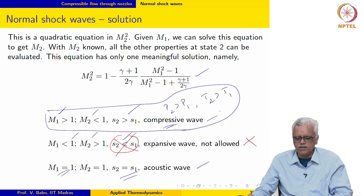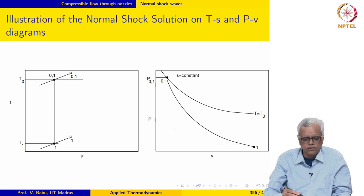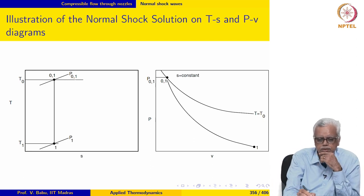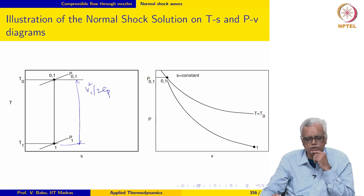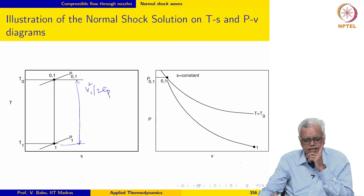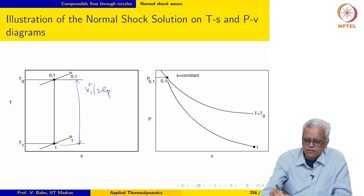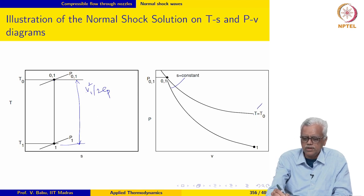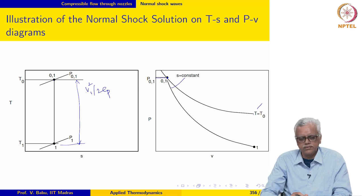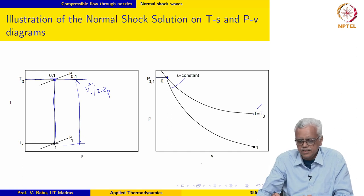Let us try to show the normal shock solution on a TS diagram and a PV diagram. State 1 with P1, T1, and V1 is given. The stagnation state corresponding to state 1 is shown, with T0 and P01 indicated. On the PV diagram, the S equal to constant line and the stagnation temperature isotherm are shown; their intersection gives the stagnation state P01.